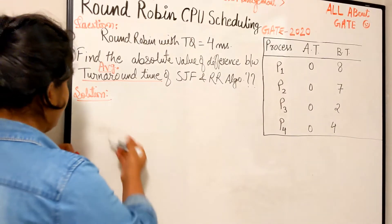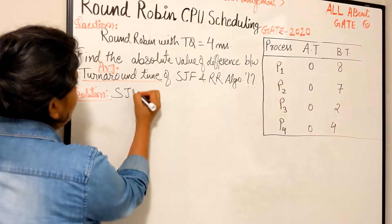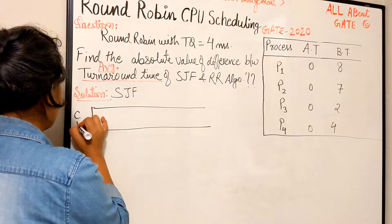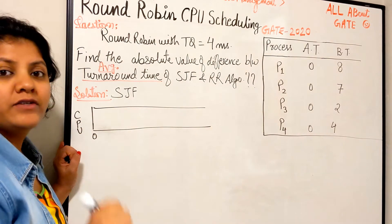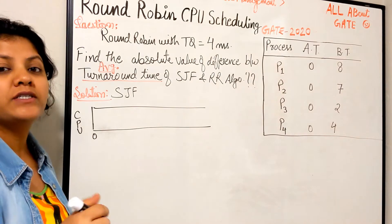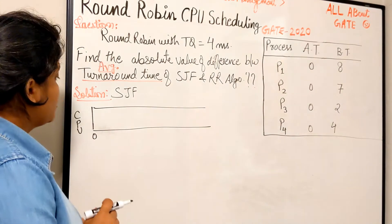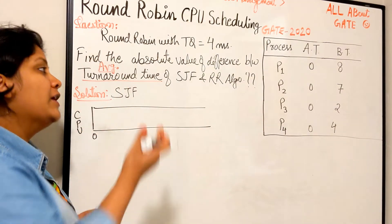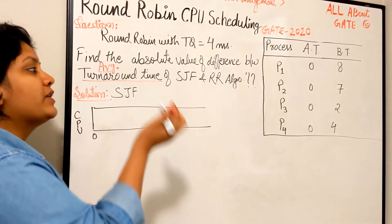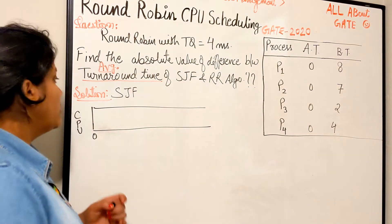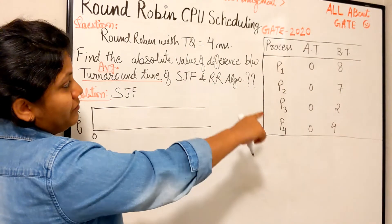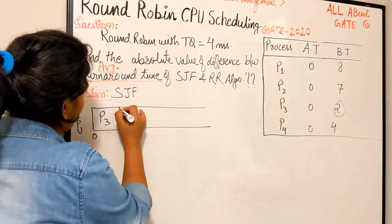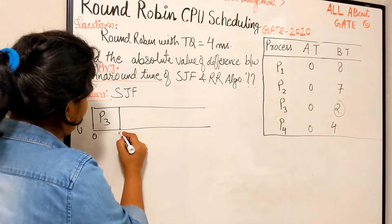Let's do SJF first. I will directly schedule Shortest Job First. If anyone is confused, please go back in the playlist and find the Shortest Job First videos where we've explained it in detail. Shortest Job First says whichever process is shortest, schedule that. All processes arrive at time zero, so we simply pick the least time process, which is P3.